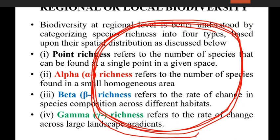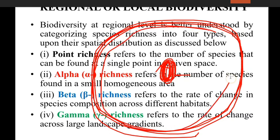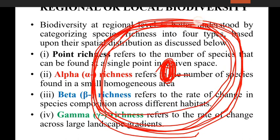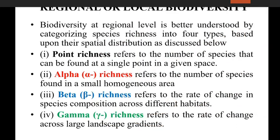For example, in a given space — say a region — at a single point within it, you calculate the average number of species found in that radius. This is point richness. Alpha richness refers to the number of species found in a small homogeneous area — meaning an area where soil type, climatic factors, and environmental conditions are the same. The number of species in that uniform area is called alpha richness.